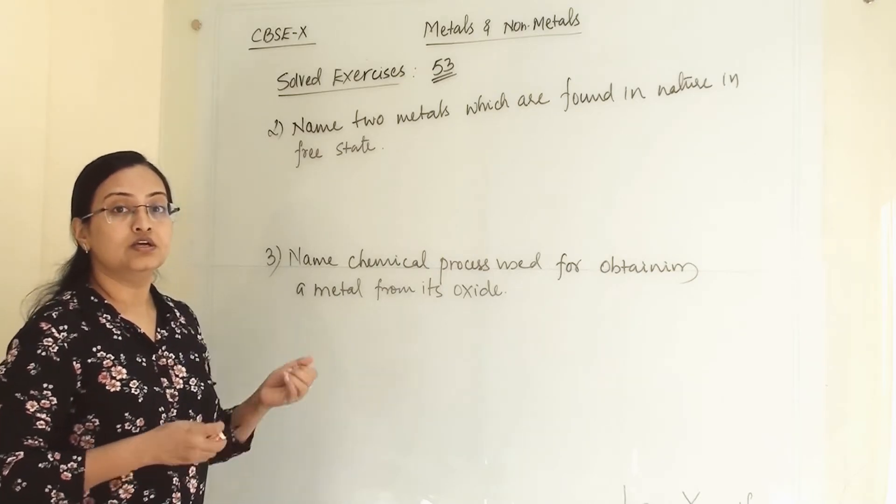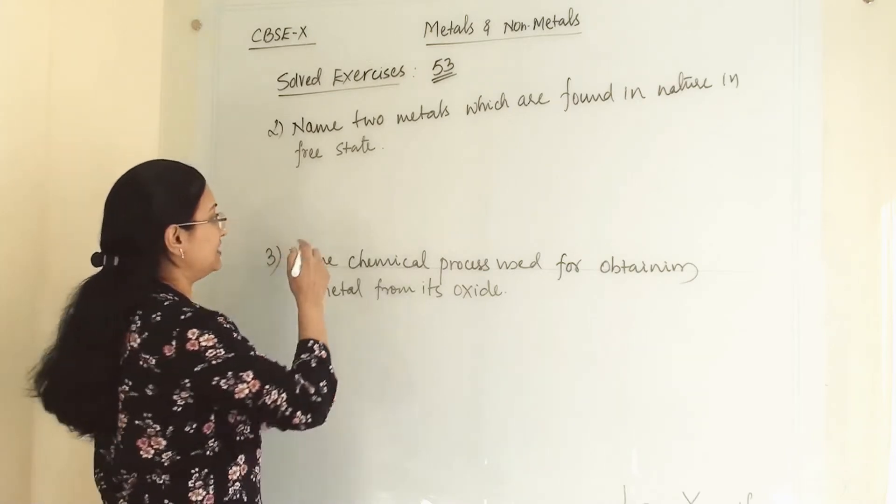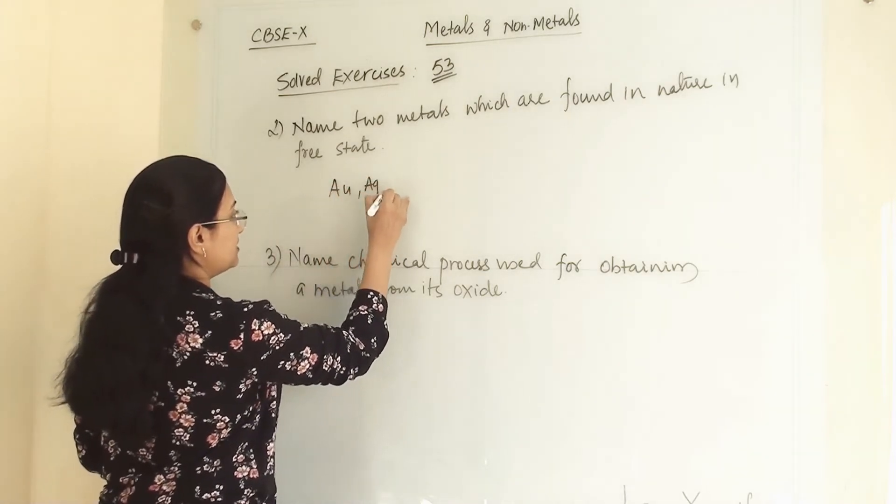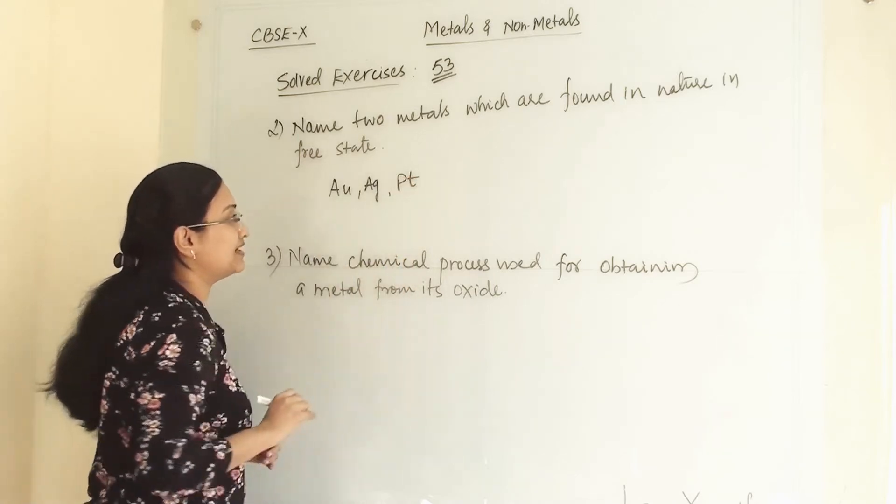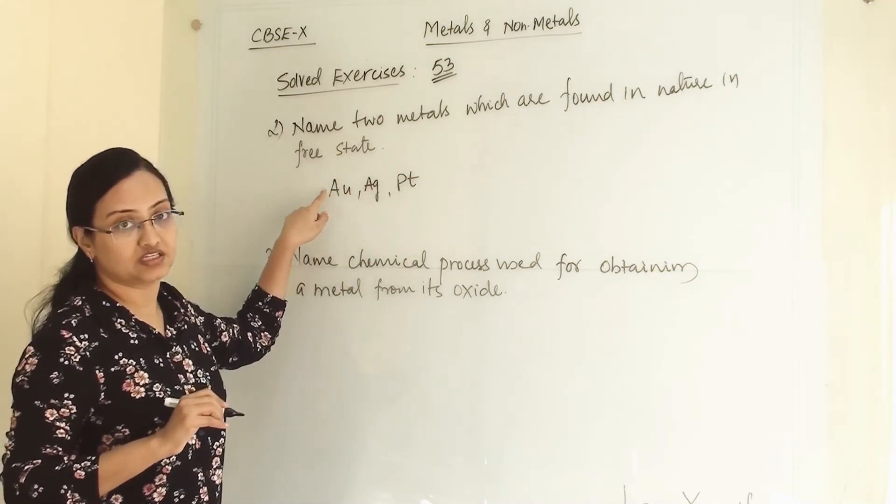All the metals which are placed below in the reactivity series like gold, silver, platinum—all these metals can occur naturally or in free state in nature.